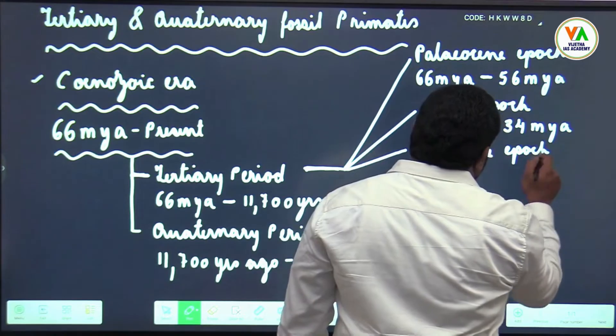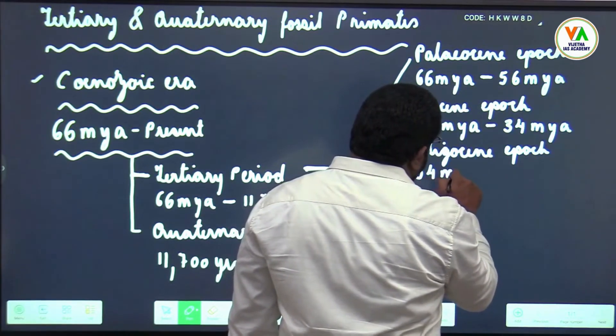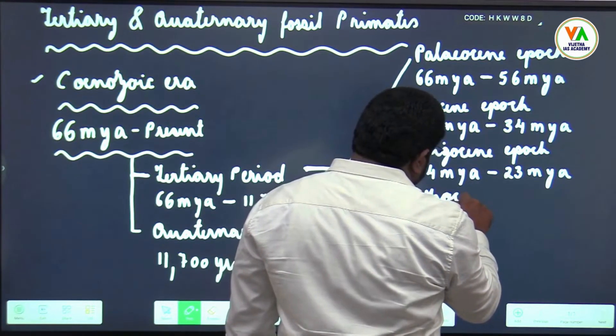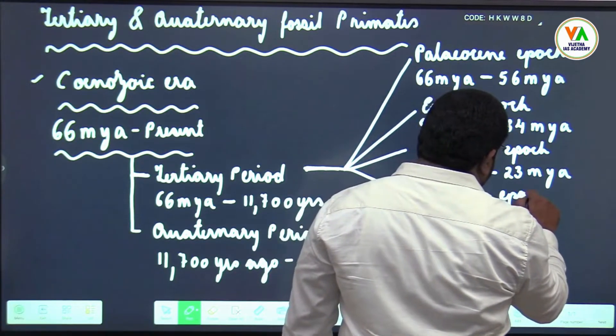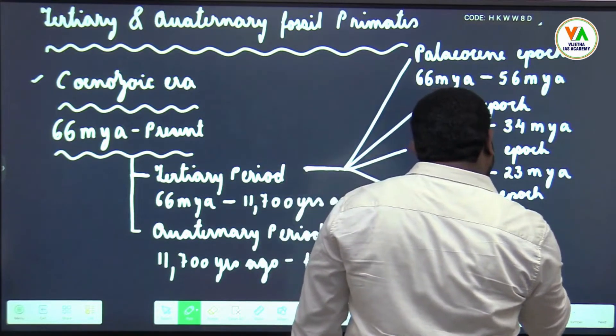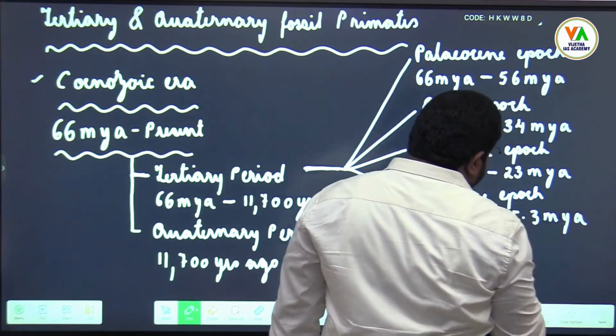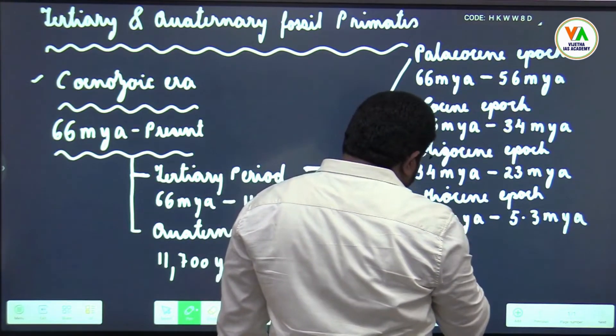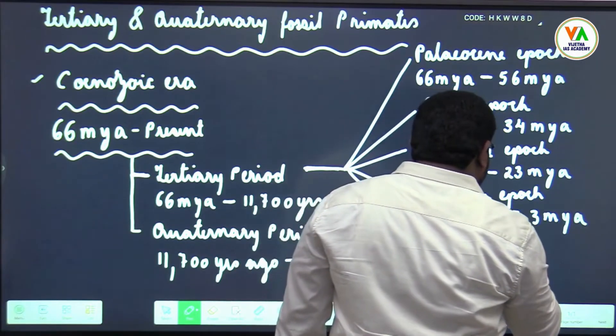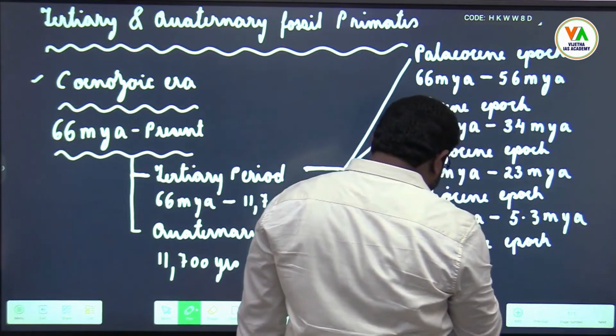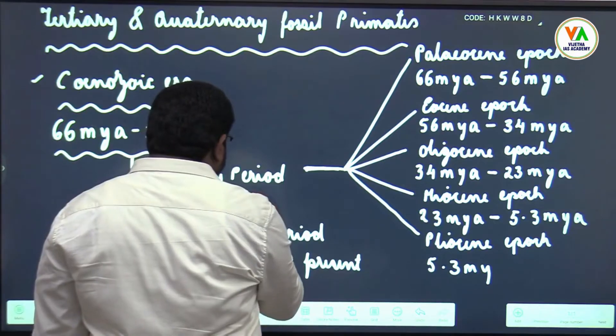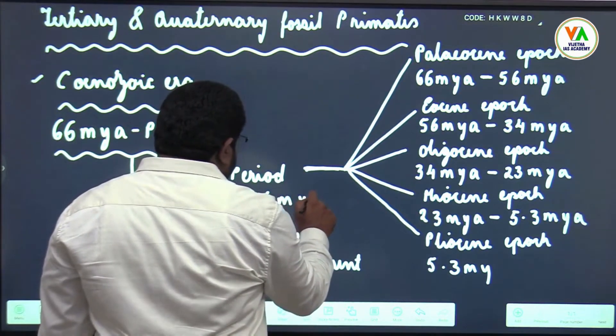Oligocene epoch is 34 million years ago to 23 million years ago. Miocene epoch is 23 million years ago to 5.3 million years ago. Then after that you have Pliocene which is 5.3 million years ago to 2.6 million years ago.